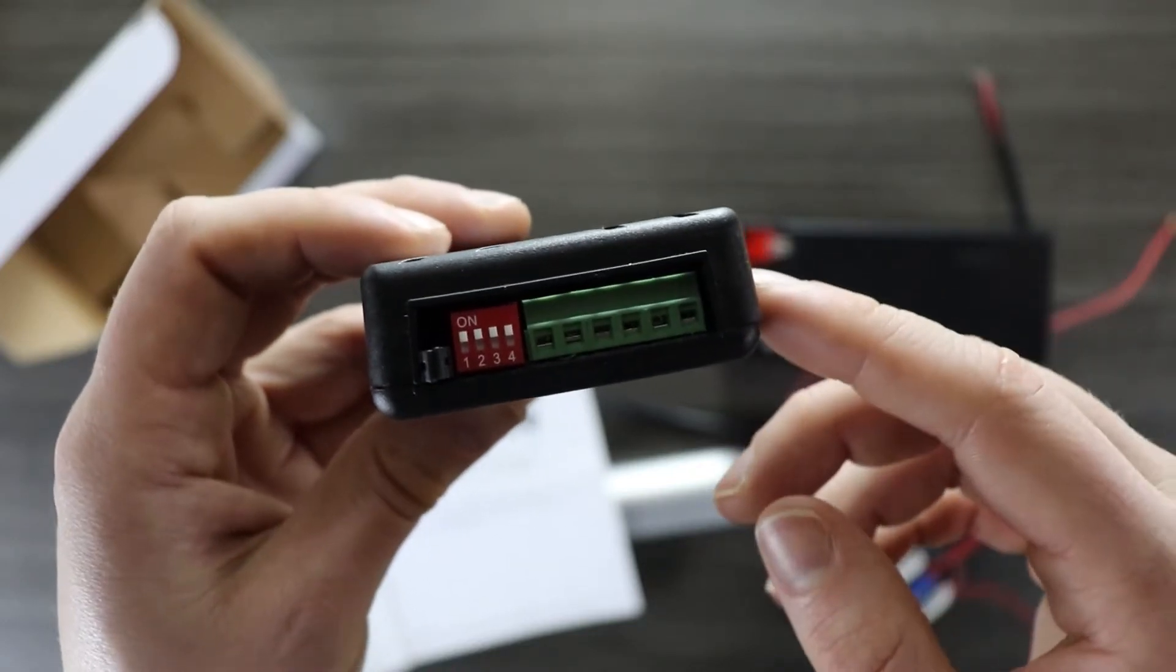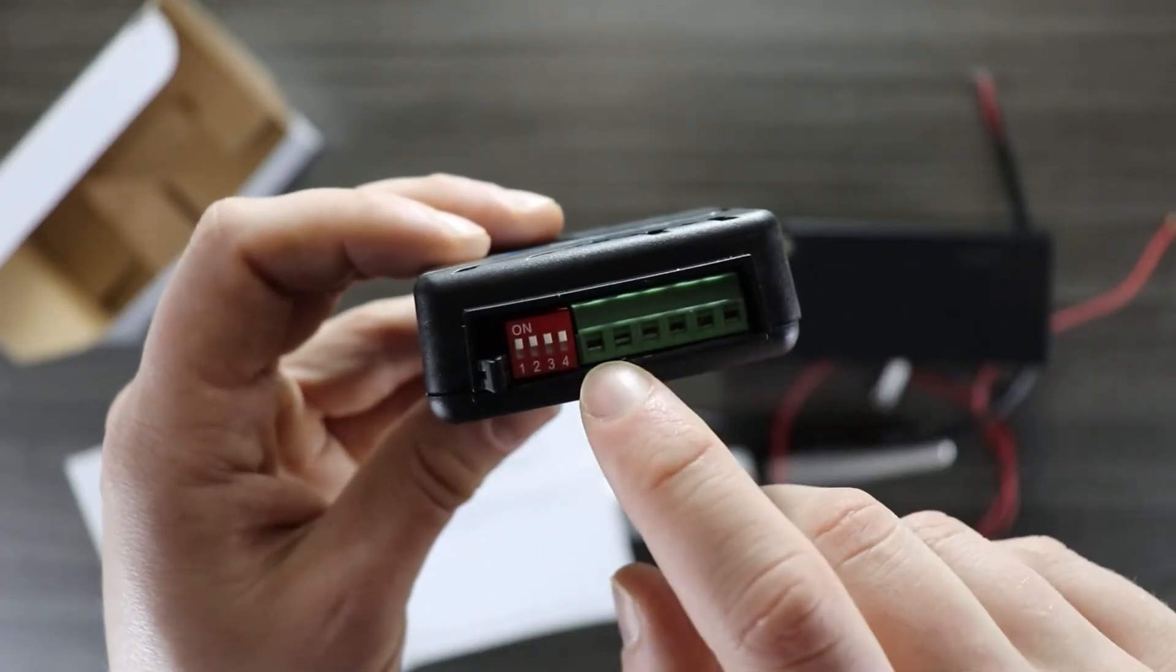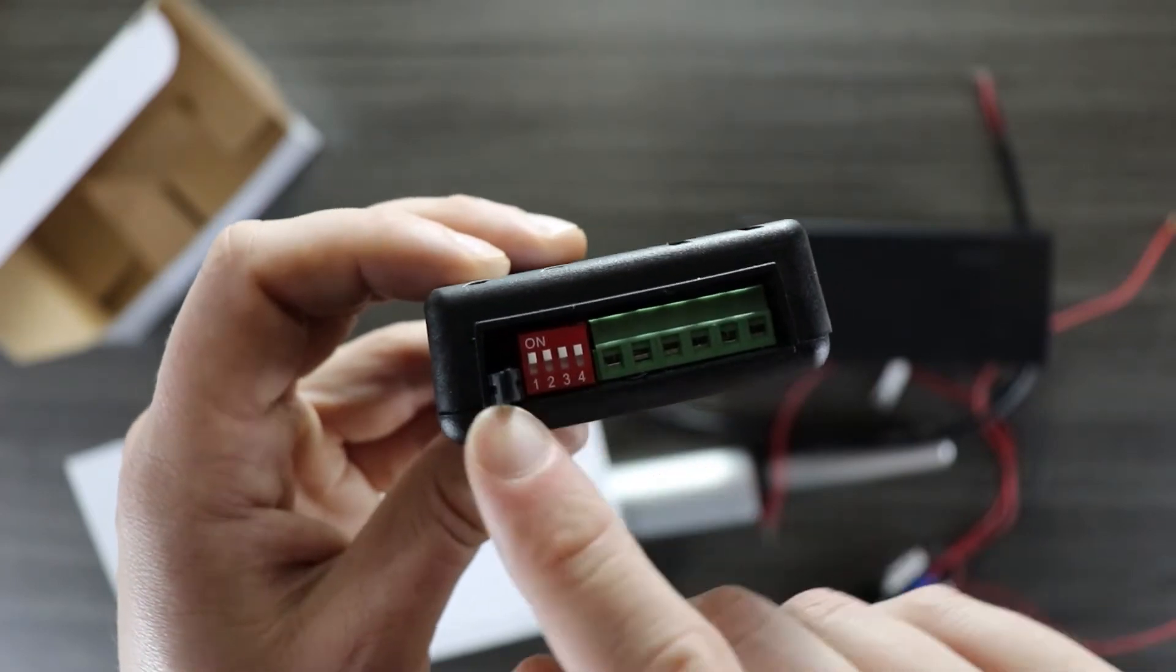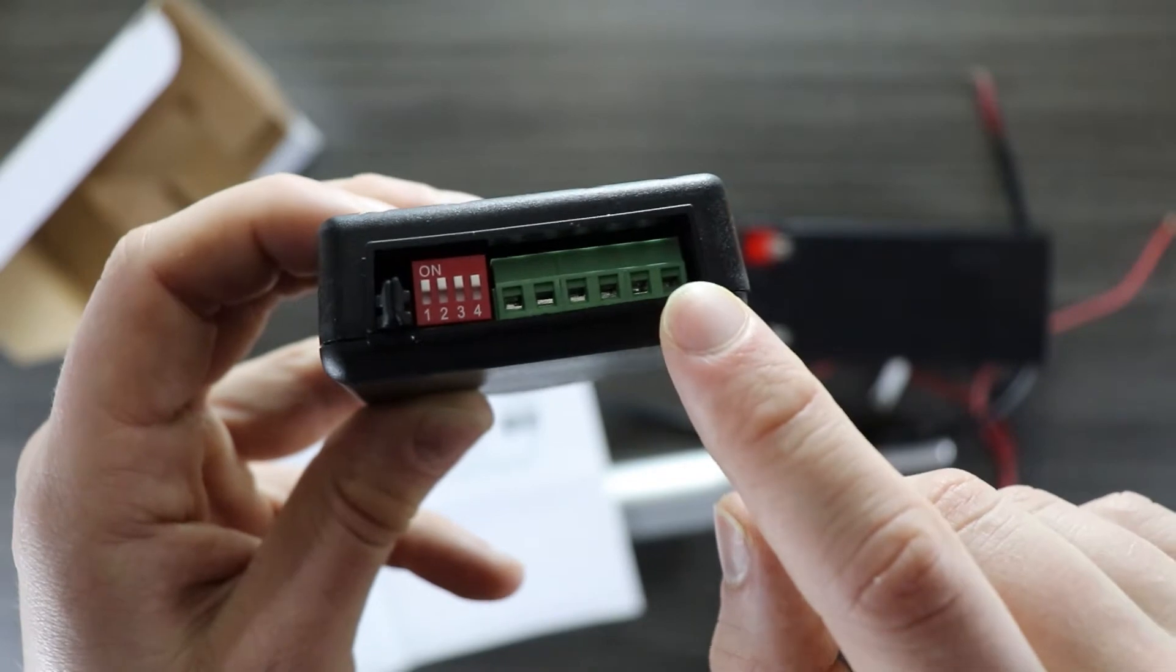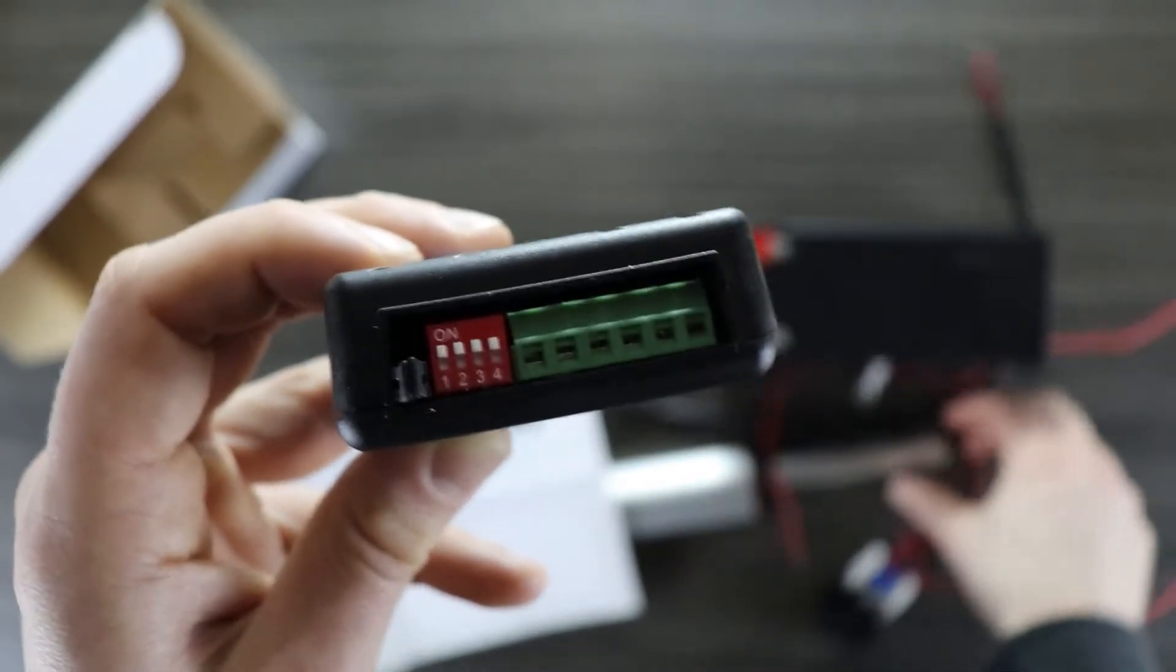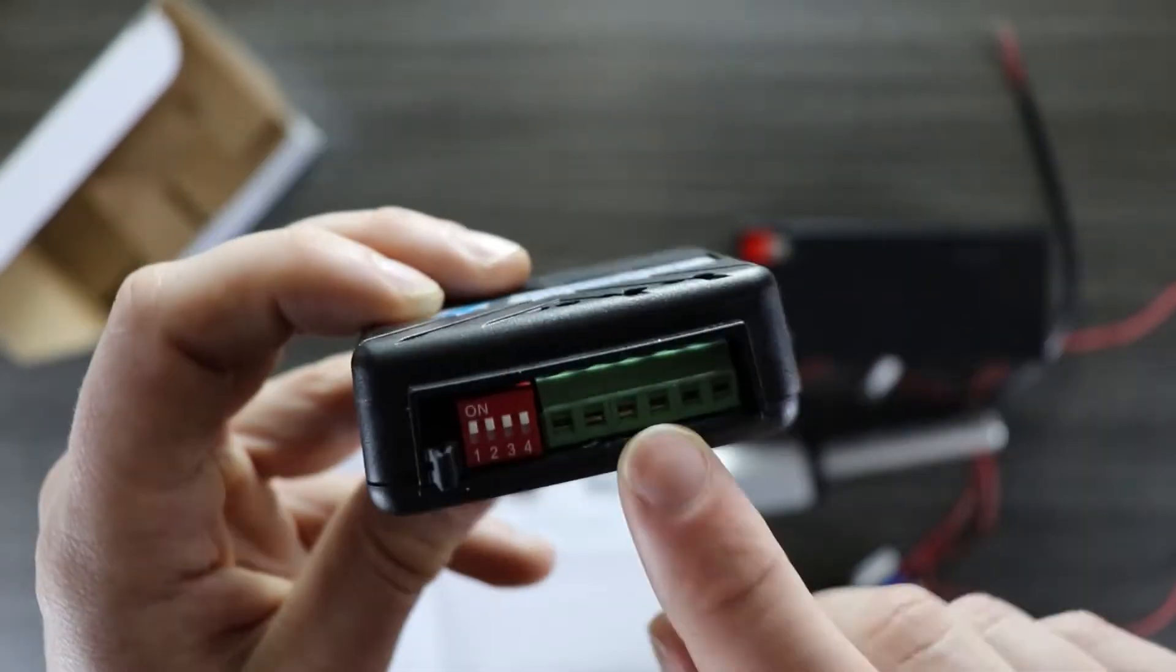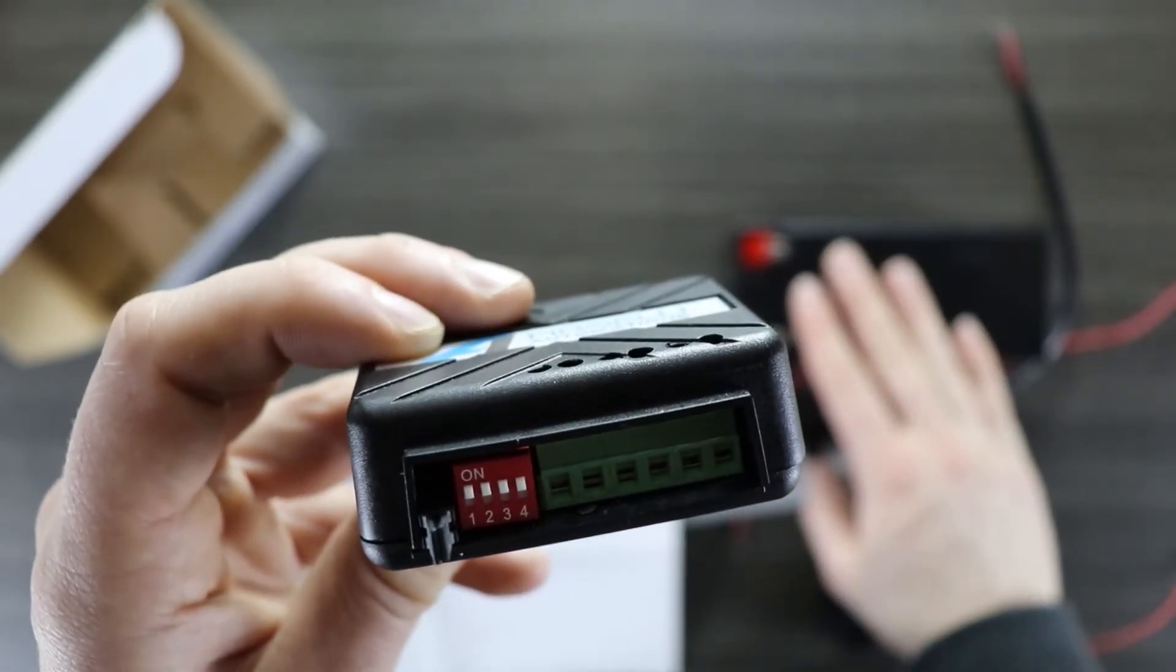Looking at the side of the control board we'll see that there are six terminal blocks here, four dip switches and then two jumper pins. The first two screw terminals are for connecting up the actuator itself. The second two terminals are for connecting to the 12 volt power supply.